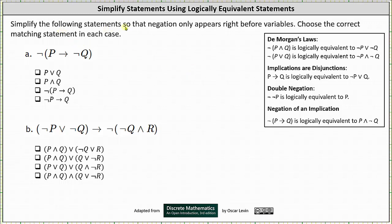We want to simplify the given statements so the negation only appears right before variables, and we're asked to choose the correct matching statement in each case. For part a, we have the negation of the implication 'if p then not q.' Looking at our notes on the right, the negation of the implication 'if p then q' is logically equivalent to p and not q.